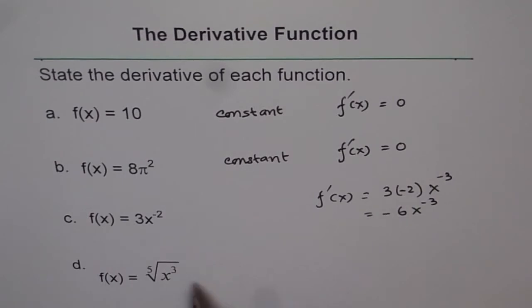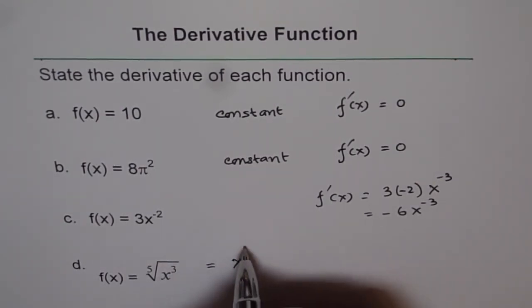Now for this function, we will go one step and we will write this as a fraction first, exponent as a fraction, a rational exponent, which is 3 over 5.